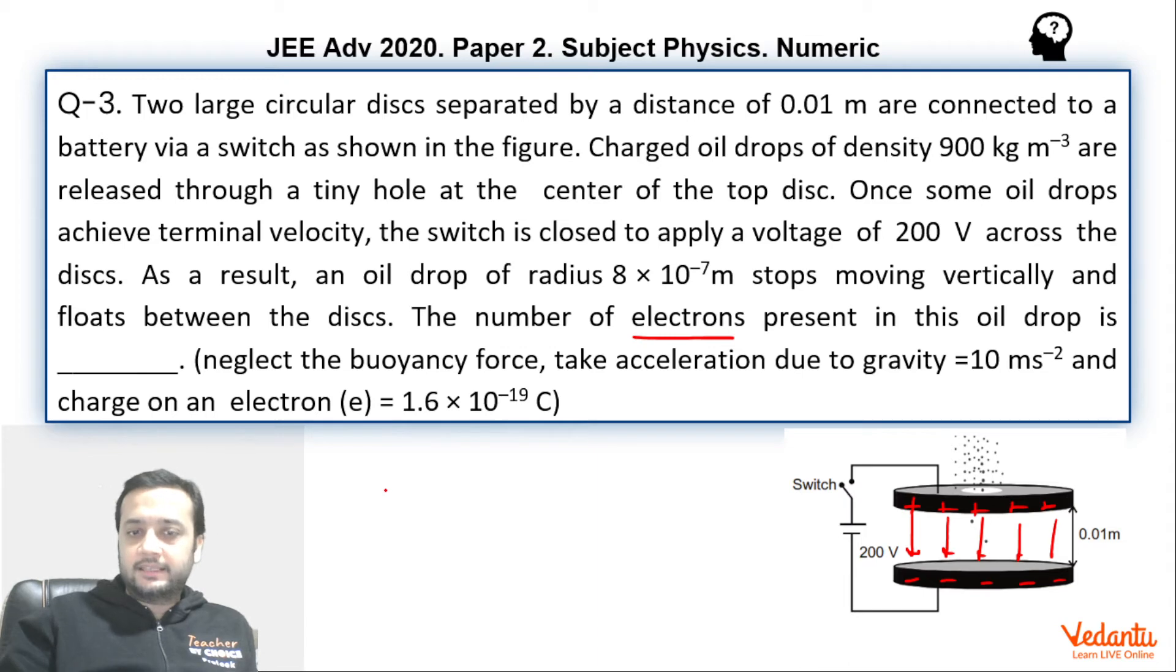Let's assume that the number of electrons on the charge was n, which is what we have to find. The magnitude of the charge on the electron is 1.6 × 10^-19, which is also given in the question. So this is the total charge on the electron. The electrostatic field between the plates is simply the potential difference across the plates, which is 200 divided by the distance between the plates, which is 0.01. This is the net force acting on the charged particle in the upward direction, must be balancing the gravity.